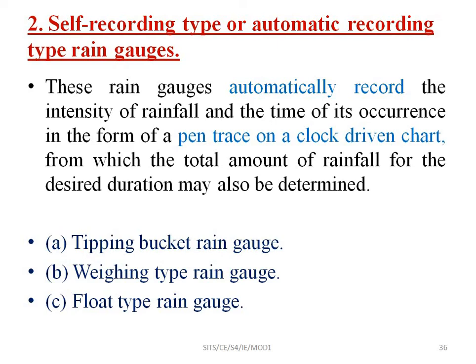The second main category is the self-recording or automatic recording type rain gauge. This rain gauge automatically records the intensity of rainfall and the time of its occurrence in the form of a pen trace around a clock-driven chart, from which the total amount of rainfall for any desired duration may also be determined. There are three types: tipping bucket, weighing type, and float type rain gauge.